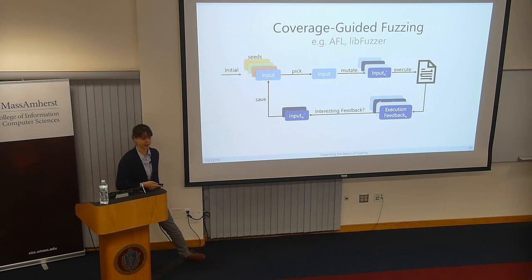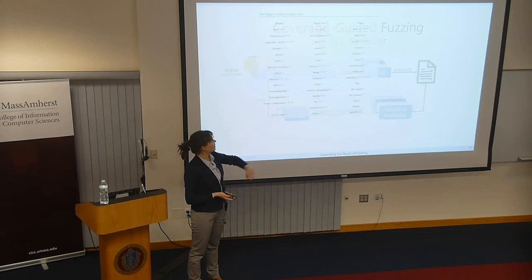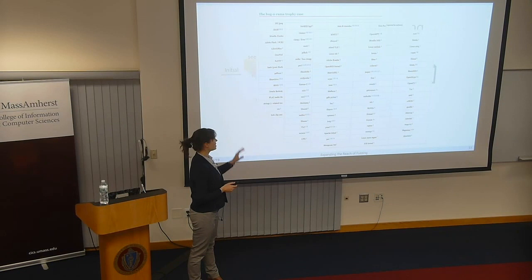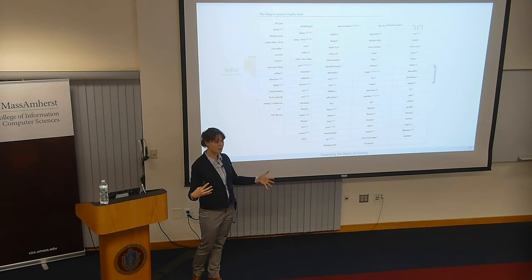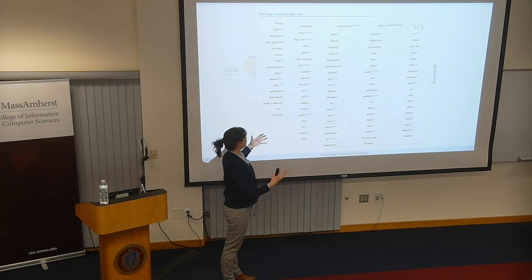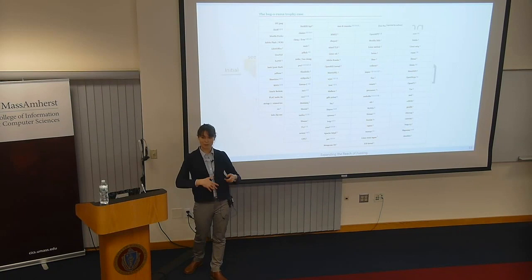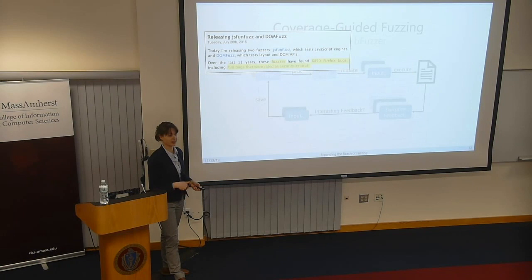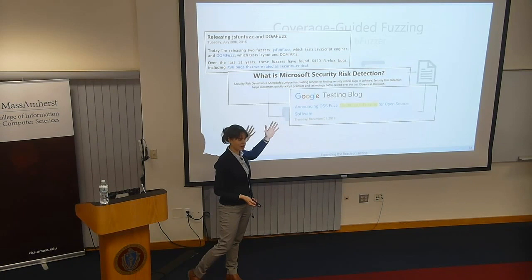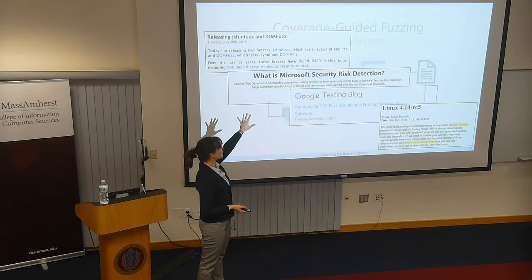This is generally called coverage-guided fuzzing because the execution feedback is in the form of coverage. The tools that pioneered this, like AFL, made a big splash in the automated test generation community. Here's just a fragment of AFL's bug trophy case — most of these bugs were found by other people using the tool, and it only includes actual security vulnerability bugs. This tool could scale to real programs like Adobe Reader, Mozilla, Chrome, and was adopted widely at Mozilla, Microsoft, and Google.